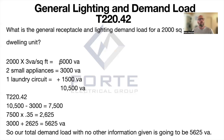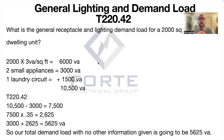Then don't forget we need to add two small appliance circuits, which is another 3,000 VA, and then we have to add one laundry circuit, which is 1,500 VA. So we get a grand total of 10,500 VA when we add all of this up.